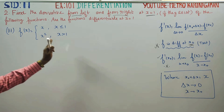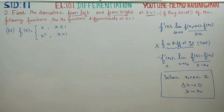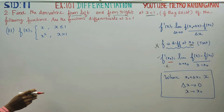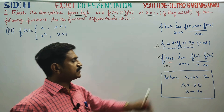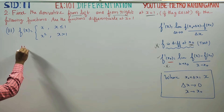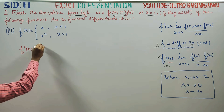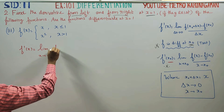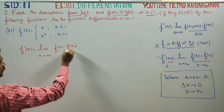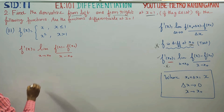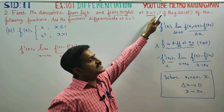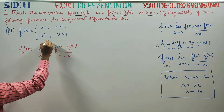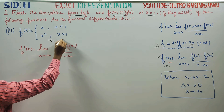To find the left and right hand side derivatives, the formula we are going to use is: f dash of x is equal to limit as x tends to x₀, of f(x) minus f(x₀) by x minus x₀. Here x₀ is equal to 1.